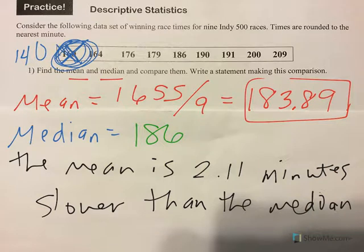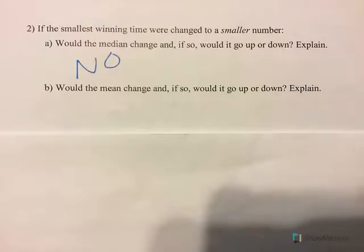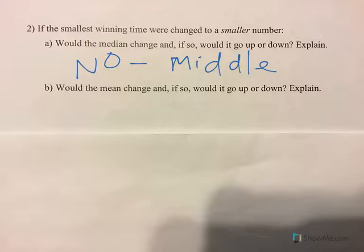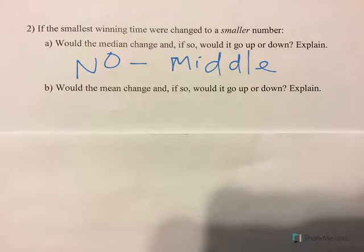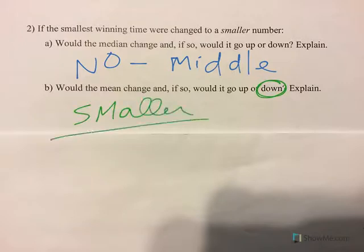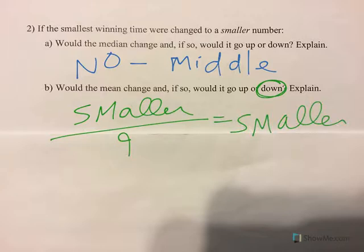Would the median change? Think about that. If I change this to 140, does it change the middle number? No! The median would still stay in the middle, which means the smallest number would have no effect on it at all. But would the mean change? Yes, because when I add these together, this number would change. So because the number got smaller, the mean would go down — you'd have a smaller sum divided by 9. So when you change a value on either end, it doesn't affect the median in the middle, but it does affect the mean.